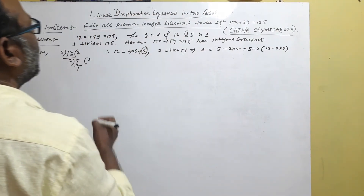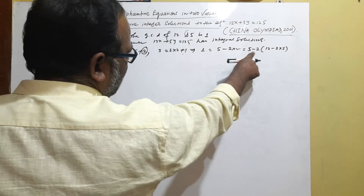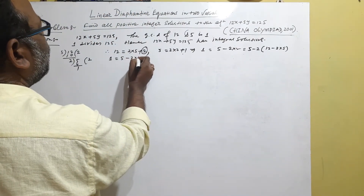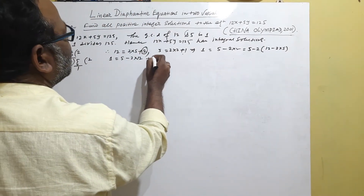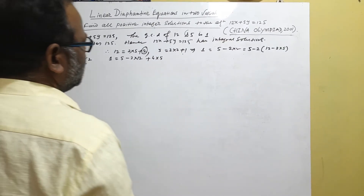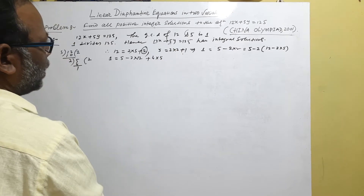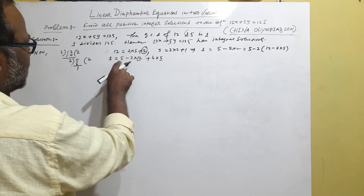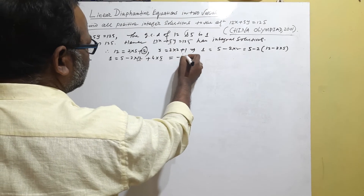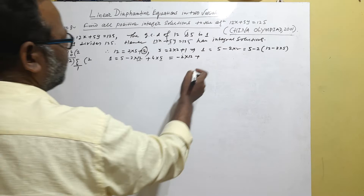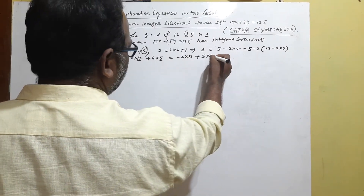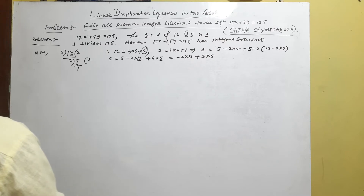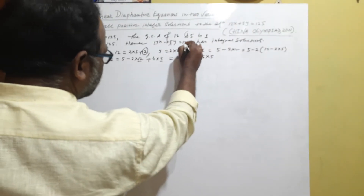Expanding this expression: 1 = 5 minus 2×12 plus 4×5. We always follow the coefficients of 12 and 5. This is 4 times of 5 and 1 times of 5, so we get minus 2×12 plus 5×5. The addition gives 5×5, so now 1 = (-2)×12 + 5×5.